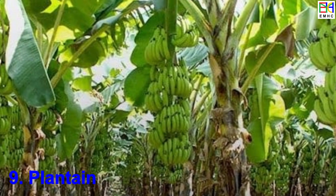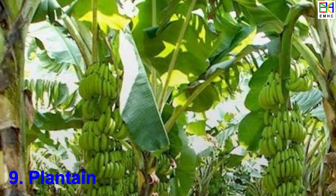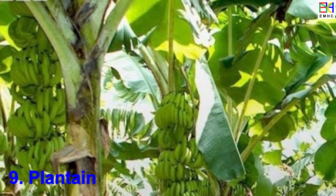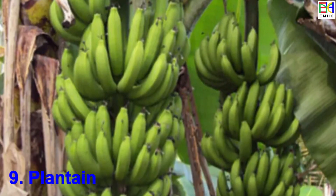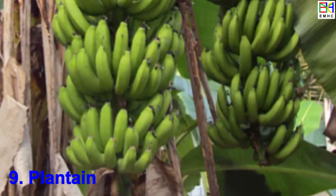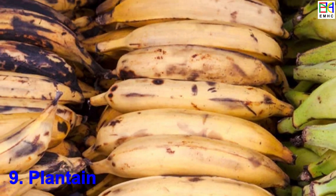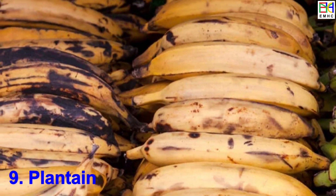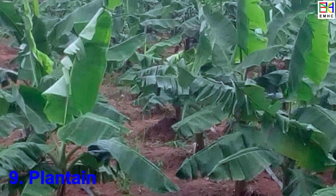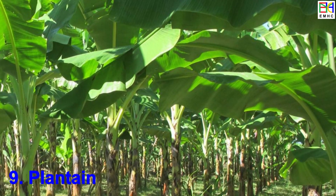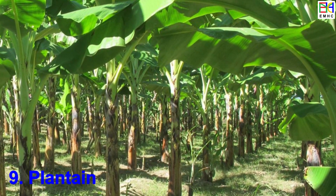Plantain is a tropical fruit closely related to bananas, characterized by its elongated shape and thicker skin, with a starchy, dense flesh. The skin of plantain is green when unripe and turns yellow or black when fully ripe. Plantain goes through growth stages, including planting suckers or corms, vegetative growth, flowering, and fruit development.